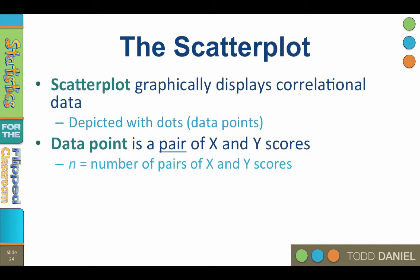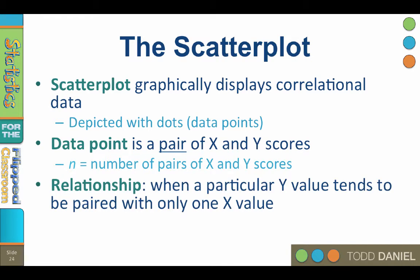The sample size, n, is the number of pairs of x and y scores. Correlation measures the direction and the strength of the relationship between variables. A relationship is said to exist when any given y value tends to be paired with one and only one value of x. If every y value was truly paired with one and only one x value, there would be a perfect relationship between the variables.